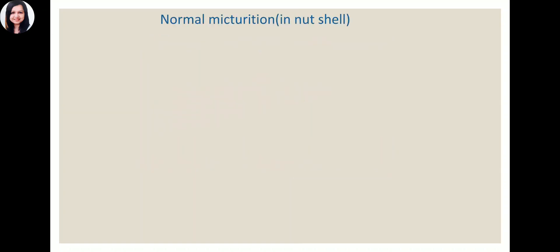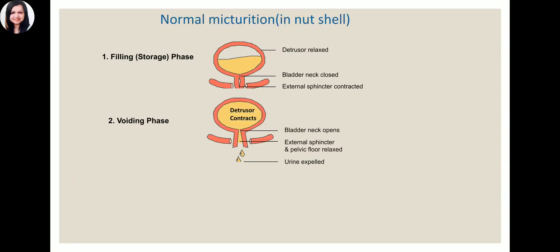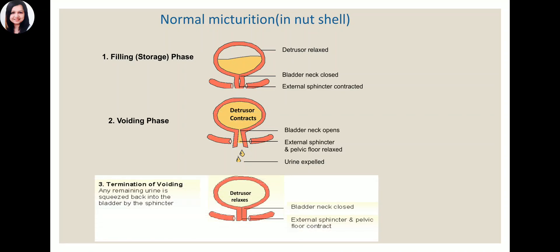In summary: during filling and storage, sympathetic activation keeps the detrusor relaxed, the bladder neck closed, and the external sphincter contracted. During voiding, the detrusor contracts, the bladder neck opens, the internal and external sphincters open, and pelvic floor and abdominal muscles relax to expel urine. At the end of voiding, some urine always remains in the bladder — this is called residual urine.